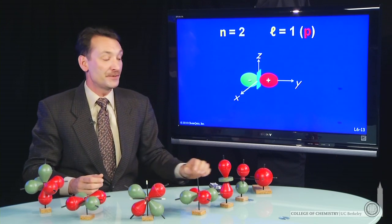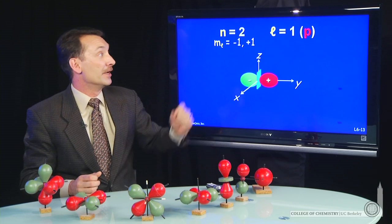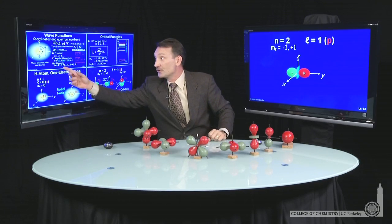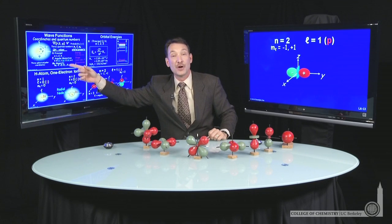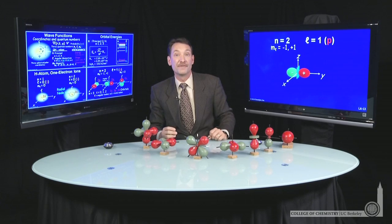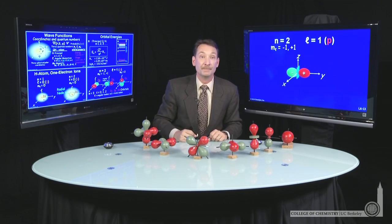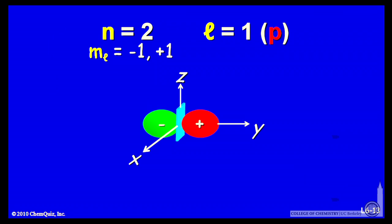How about the values of m sub l? The values of m sub l for l equal 1, remember, m sub l goes from minus l to l in integer steps. So from minus 1, 0, 1, three values of m sub l for the value l equal 1. So we're going to have three different p orbitals.